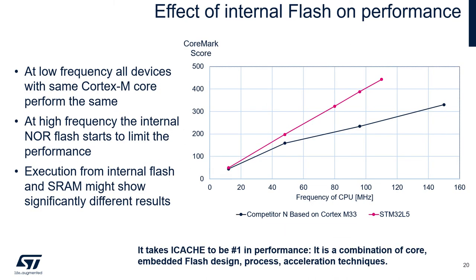In the graph, you see the dependency of CoreMark score on core frequency for STM32 L5 and a competitor also based on Cortex-M33, with code executed from internal flash in both cases. At low frequency, performance is almost the same, but at higher frequencies, flash wait states and the lack of cache start to limit the competitor. L5 reaches similar performance at 80 MHz where the other device needs to run at 150 MHz. This has significant implications for consumption, as the same amount of computational work can be done at lower frequency and therefore at much lower consumption. Note that CoreMark can also be executed from SRAM, which is always zero wait states at all frequencies, so results from flash and SRAM can differ significantly.